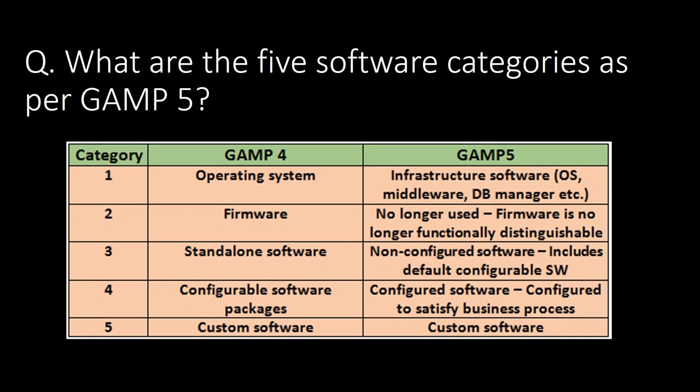What are the five software categories as per GAMP-5? Category 1 is operating systems, which includes infrastructure software, operating systems, middlewares, and DB managers. Category 2 is firmware, and currently firmware is no longer functionally distinguishable from hardware. Category 3 is standalone softwares, which includes default configurable softwares. Category 4 is configurable software packages, and category 5 is custom softwares.